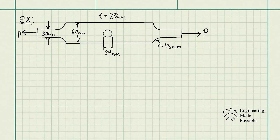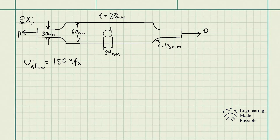The problem statement is: a steel bar has the dimensions shown. Determine the maximum axial force P that can be applied so as not to exceed an allowable tensile stress of 150 megapascals. The plate has a thickness of 20 millimeters and the corners have a radius of 15 millimeters.